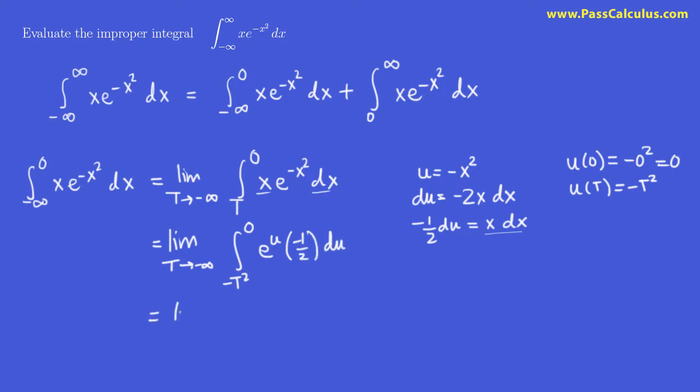And that, believe it or not, is much better. So let's bring the minus one half to the front. And then we just have the integral of e to the u. Well, that's the most easy integral. The integral of e to the u is e to the u. So we have that.